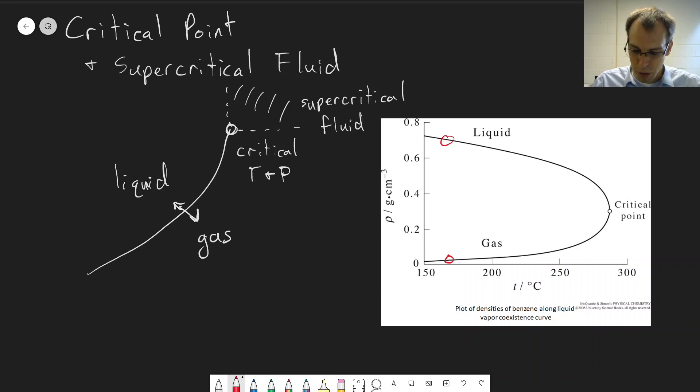We can see below the critical point at lower temperatures, and this is at the critical pressure, we get very different behavior. A liquid has a much higher density than a gas.